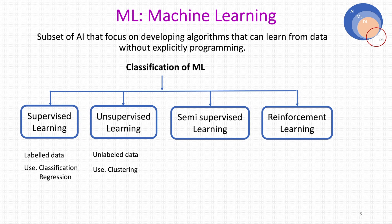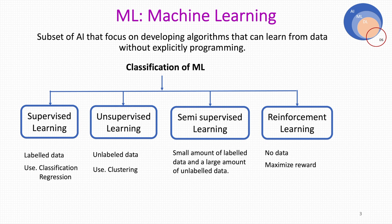Second is unsupervised learning, where we don't have labeled data — data is unlabeled — and our goal is to infer the natural structure present within the dataset. Such learning is used for clustering. Semi-supervised learning falls between supervised and unsupervised learning; it uses a small amount of labeled data and a large amount of unlabeled data. The last one is reinforcement learning, where an agent is trained to make a sequence of decisions by rewarding or penalizing the actions taken. The algorithm tries to get maximum rewards.